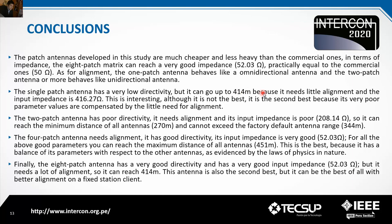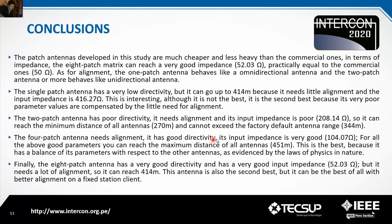The single patch antenna has very low directivity but can reach 414 meters, because it needs little alignment and the input impedance is 416 ohms. The two-patch antenna has poor directivity, needs alignment, and its input impedance is poor at 208 ohms, so it reaches only 270 meters — less than the factory default antenna range of 344 meters. The 4-patch antenna needs alignment, has good directivity, and its input impedance is 504 ohms; with these good parameters it achieves the maximum distance of 451 meters.